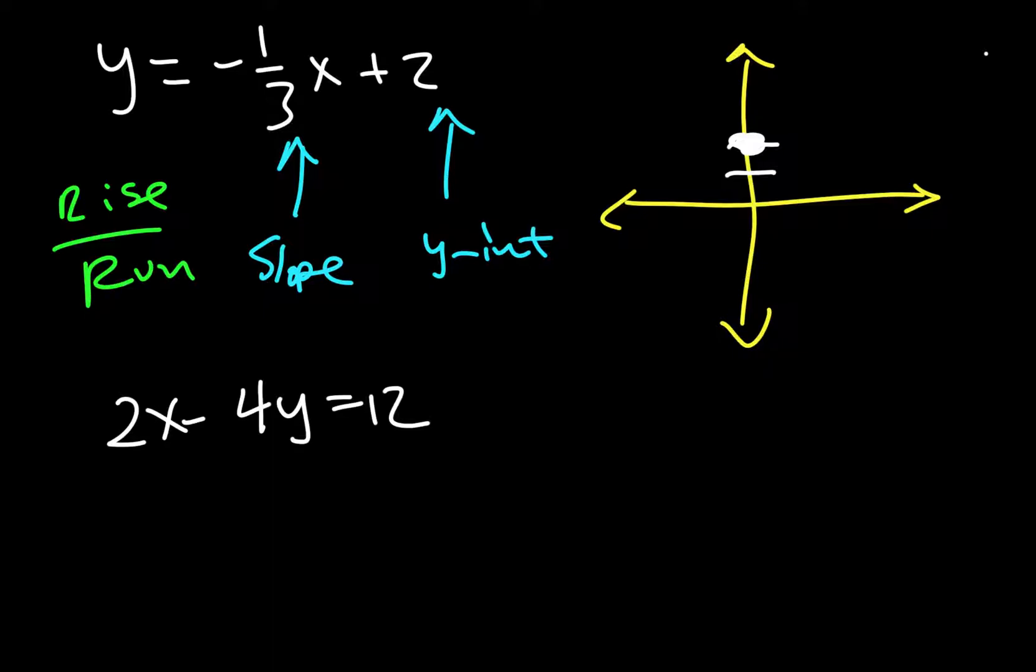So we rise negative 1, so we come down to here, and then we run 3. 1, 2, 3. So we go 1, 2, 3. We draw a second dot right there.